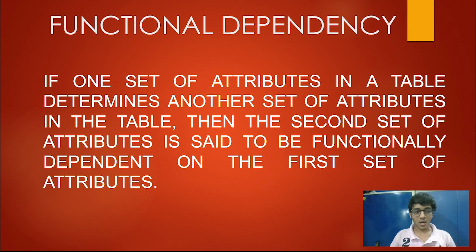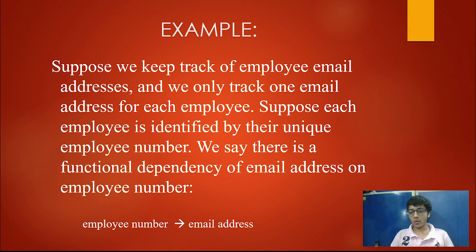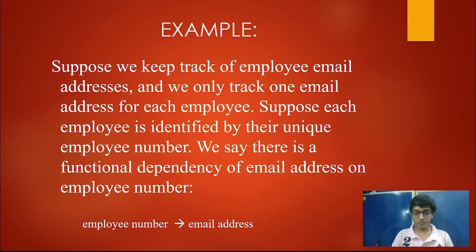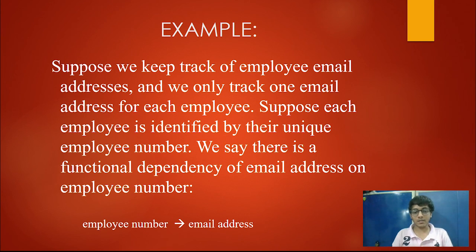Before we go on to these normalizations, we must learn what functional dependencies are. If one set of attributes in a table determines another set of attributes, then the second set is said to be functionally dependent on the first. For example, if we keep track of employee email addresses and each employee is identified by a unique employee number, then there is a functional dependency of email address on employee number — employee number determines email address.